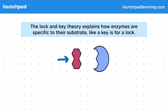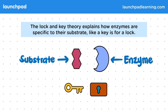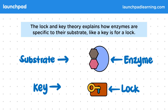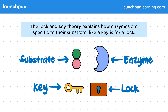In this simple diagram, this shape represents the substrate and this one represents the enzyme. The substrate can be thought of like a key and the enzyme like a lock for that key. Only the correctly sized and shaped key fits into the keyhole of the lock. You should be able to use models like this in the exam to explain the action of enzymes.